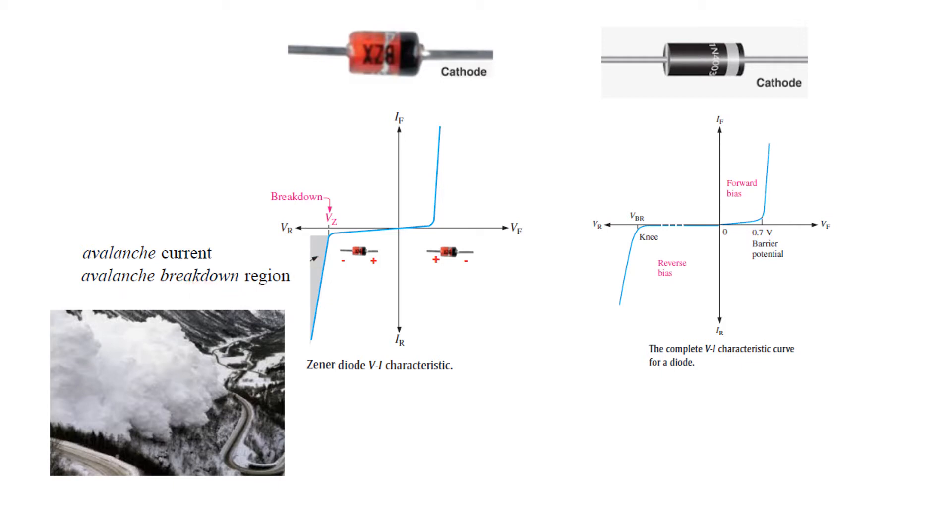I hope you know what is avalanche. On the hills when snow starts rolling from the top, it keeps on getting momentum and keeps on increasing in size and becomes very big and it can destroy the road and the trees and the houses that come. So from that name we have taken here avalanche current, that means there is an excessive current that will flow at this point, at the breakdown point.